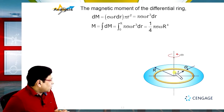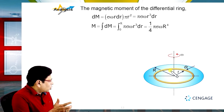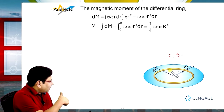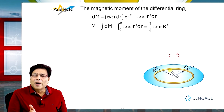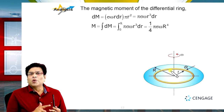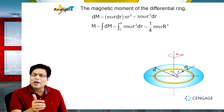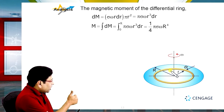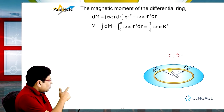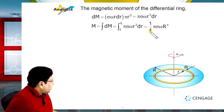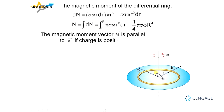If we observe from the top, the disk is rotating in the counter-clockwise sense, which means the current in each elemental ring also flows counter-clockwise. Using the right-hand rule, the direction of the magnetic dipole moment aligns with the angular velocity direction. So in vector form, the magnetic dipole moment equals one-quarter times pi times sigma times R to the power 4 multiplied by omega-vector.